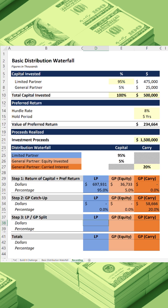Now it gets much easier. We just need to calculate the 80/20 split between investors and the sponsor. So we take the remaining proceeds and multiply by pro rata percentages. The only thing to be mindful of is that now the investors only get 80% of the pie. So we take what they contributed as a percentage and multiply that by 80%, and then do the same thing for the GP equity.